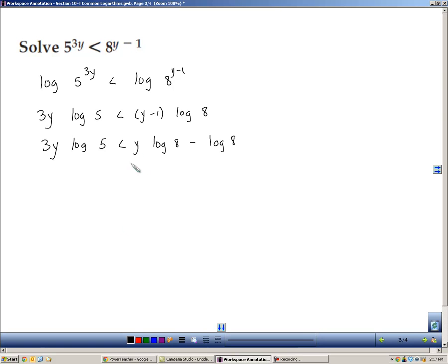Now I'd like for these two y terms to be by themselves, so I'm going to subtract y log 8. I'm going to subtract that from both sides. And then I'm going to rewrite this as 3y log 5 minus y log 8. And then over here they canceled, leaving me a negative log 8. Now because these act like they were terms in a polynomial expression, I'm going to take the y from here and pull it out, leaving me 3 times log 5. And then I'm going to take the y from here, pull that out, leaving me a minus log 8. And that's still less than the negative log of 8. So I'm factoring out the y from both of these.